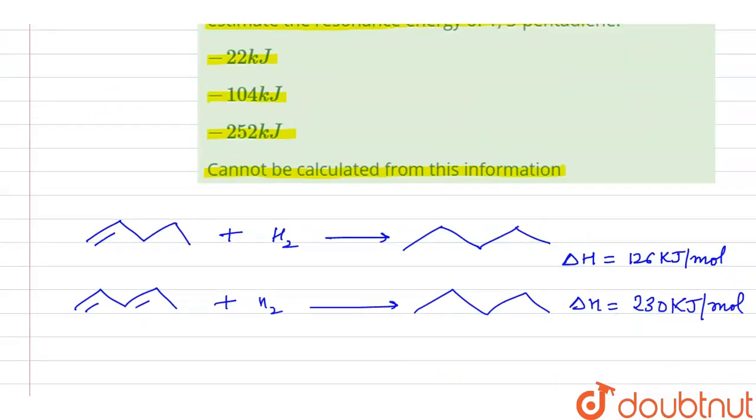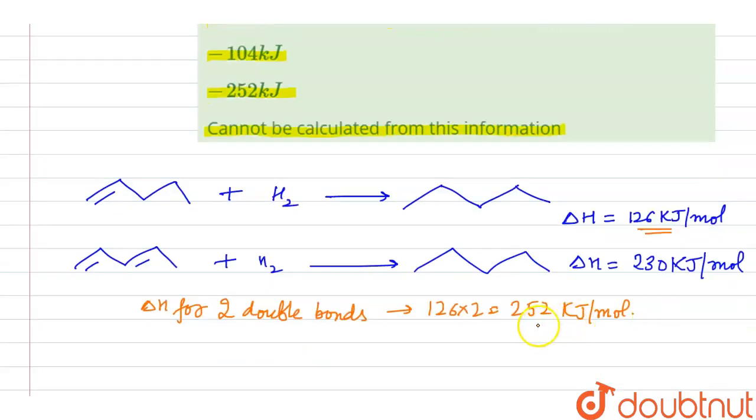Now if we see here in this first equation, for 1 double bond to be hydrogenated, the value of enthalpy is 126. So for 2 double bonds to be hydrogenated, Delta H for 2 double bonds hydrogenated will be 126 into 2 that is 252 kJ per mole. So this is basically the calculated value and from the information given.